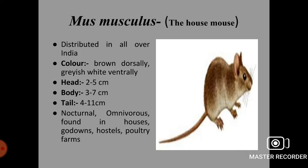Next rodent species is Mus musculus, the house mouse. It is distributed all over India. The color is brown dorsally and grayish white ventrally. Head length is 2 to 5 cm, body length is 3 to 7 cm, and tail length is 4 to 11 cm. This species is also nocturnal. It is an omnivorous pest found in houses, godowns, hostels and poultry farms.